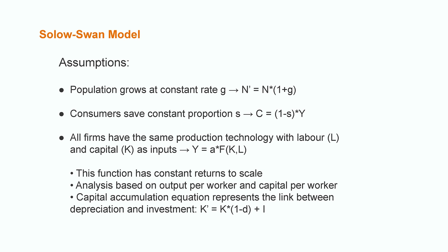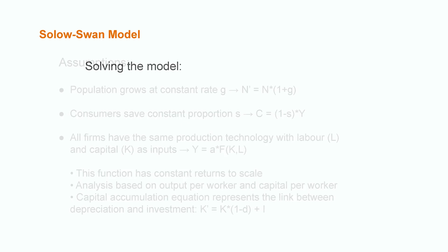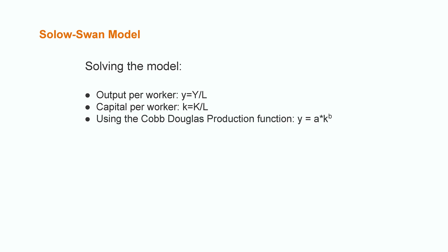Finally, the capital accumulation equation reflects the link between initial capital affected by depreciation and investment. Now let's move forward with solving the model. The output per worker and capital per worker indicators are shown in Y and K, and those will help us recreate the production function. Thinking that the Cobb-Douglas production function is the most common example, we replace those and create our new function. Then, using the income-expenditure identity, which tells us that investment equals savings, we arrive at two conclusions.